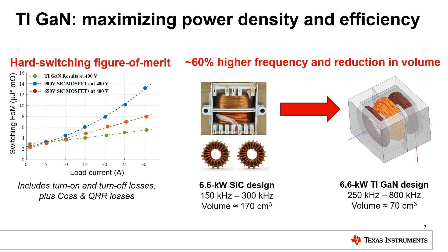The ability of GaN to maximize power density is due to its superior switching performance, which is quantified in the figure on the left. This figure shows the relative switching loss of TI GaN compared to 650 and 900 volt silicon carbide devices, and highlights that for a given load current, GaN has much lower switching loss. What this means for the system is that the switching frequency can be much faster, resulting in much smaller magnetics. In this 6.6 kilowatt example, the power magnetics are shown to reduce in volume by 60%.